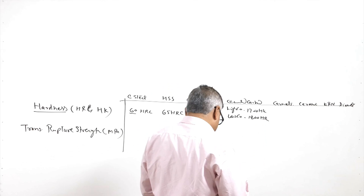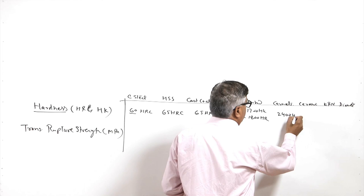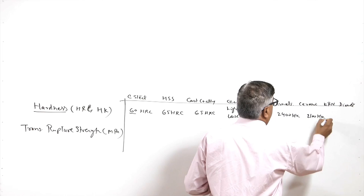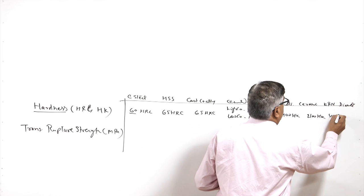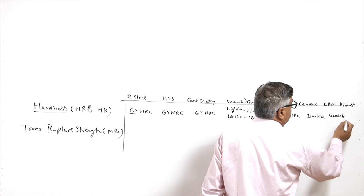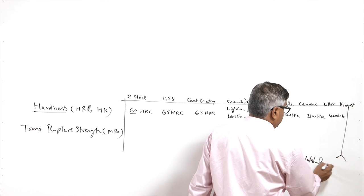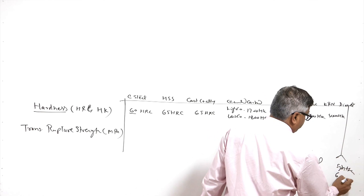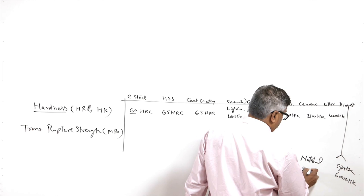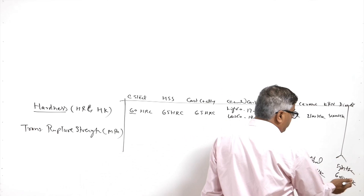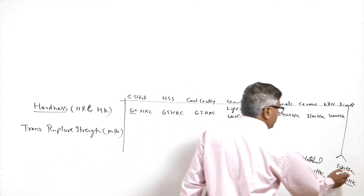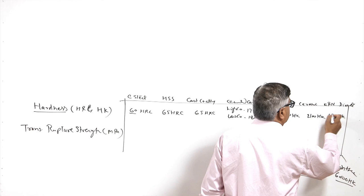Cermets offer a hardness of 2400 HK, ceramics 2100 HK, CBN 5000 HK. For diamond there are two categories: synthetic diamond offers 6000 HK and natural diamond 8000 HK. So natural diamond is the hardest material, followed by synthetic diamond, then CBN at 5000 HK. Carbon steel has the lowest hardness, and in increasing order we have: carbon steel, HSS, cast cobalt alloys, cemented carbides, cermets, ceramics, CBN, and diamond.